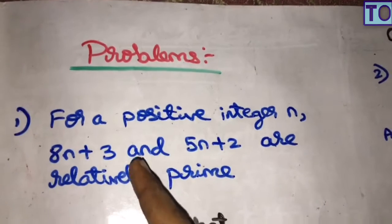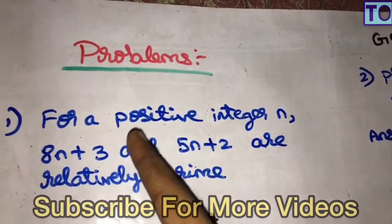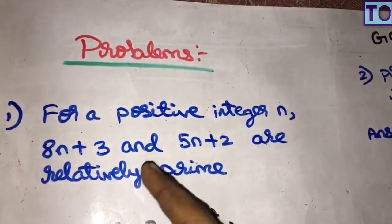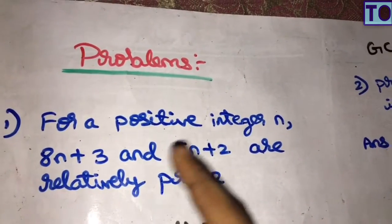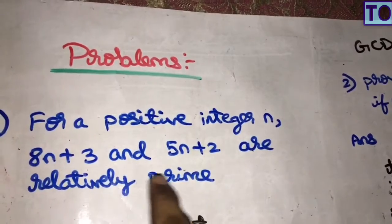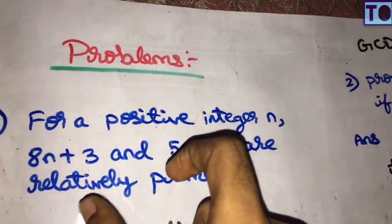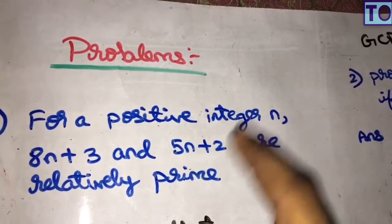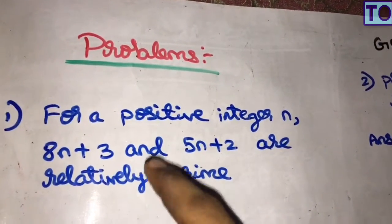Now I am going to talk about the first problem. For positive integer n, 8n plus 3 and 5n plus 2 are relatively prime. Relatively prime means gcd(a, b) equals 1.